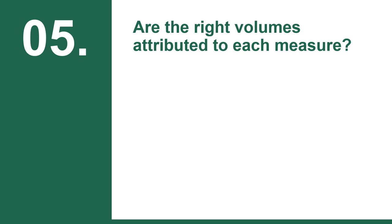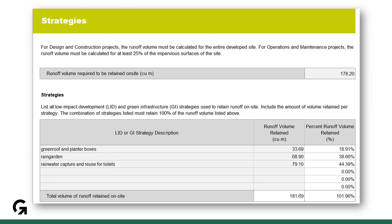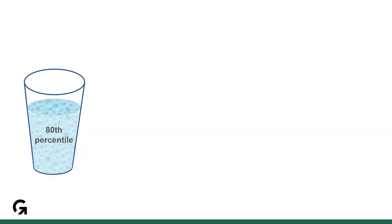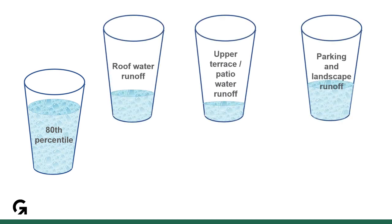The fifth check is to confirm whether the volumes attributed to each measure are appropriate. The calculator takes a very simple approach, which may lead a reader to think that if the total runoff volume from various measures exceeds the total runoff to be managed, the credit is achieved — but that's not quite right. The calculations must account for the volume being sent to each measure. Usually you wouldn't have your entire 80th percentile rainfall volume neatly merging into one cup; instead, you'll have multiple collection and catchment areas. For our example, let's say we have three.